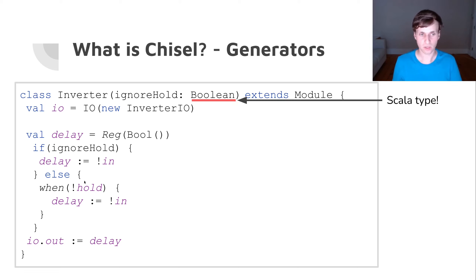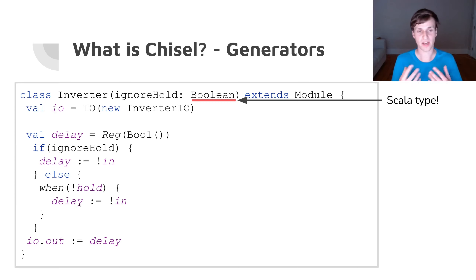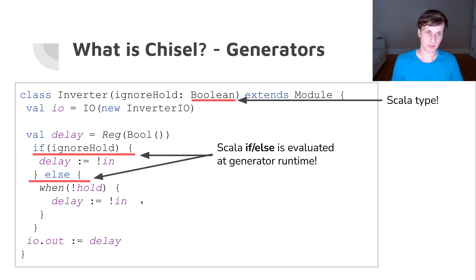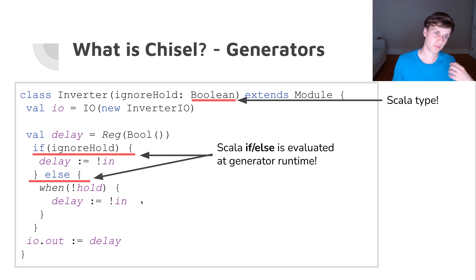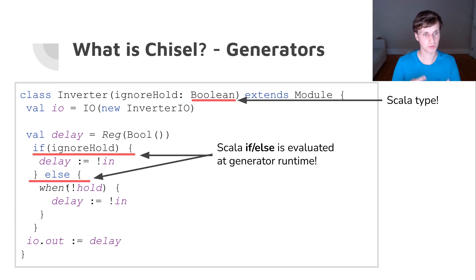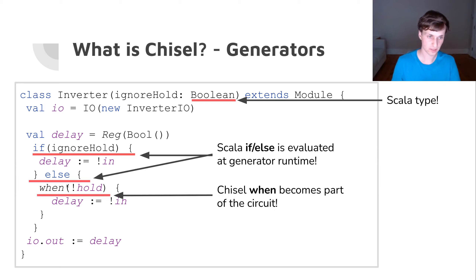If hold is false we update the delay register. The important distinction is: we have an if-else construct which is Scala, evaluated at generator runtime — this decides what kind of circuit we create. And then we have the Chisel 'when', which will actually become part of the circuit — it will become a mux in the circuit.